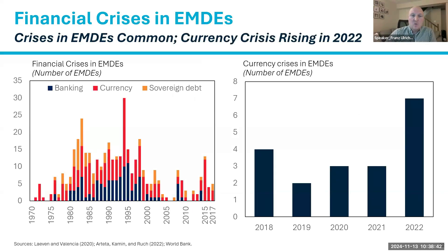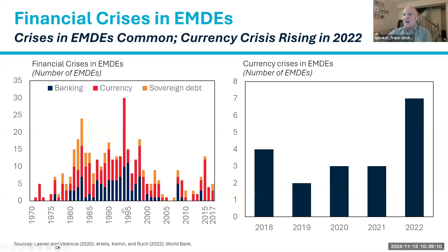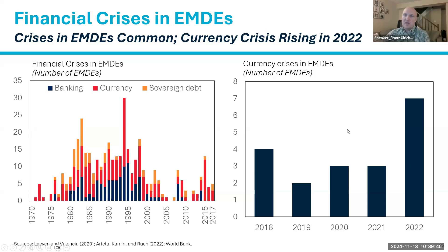We rely on Laeven and Valencia's crisis identification methodology. Their data shows peaks in sovereign debt crises in the 1980s, banking and sovereign debt crises in the 1990s including the Asian financial crisis, followed by a period of great moderation with fewer crises. While the dataset ends in 2018, applying the Laeven and Valencia currency crisis definition — a 30 percentage point depreciation — to 2022 reveals a significant increase in the number of emerging markets facing a currency crisis.